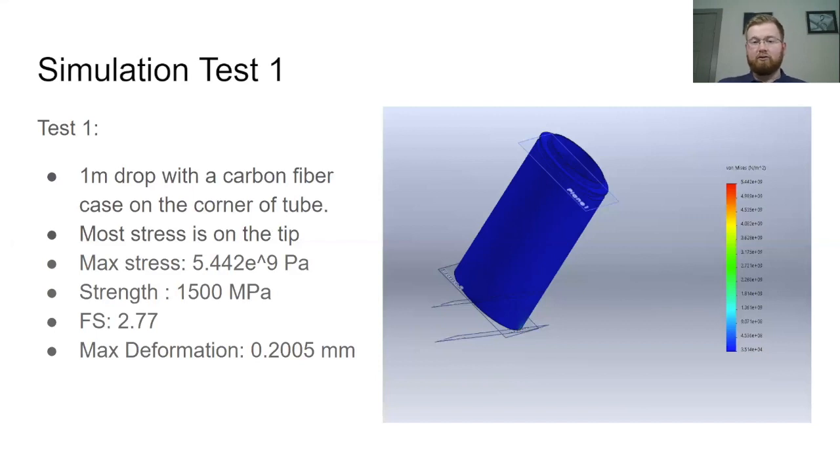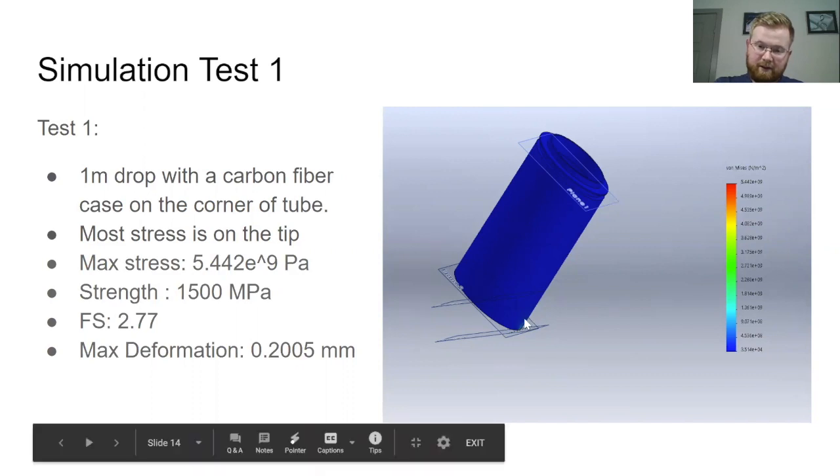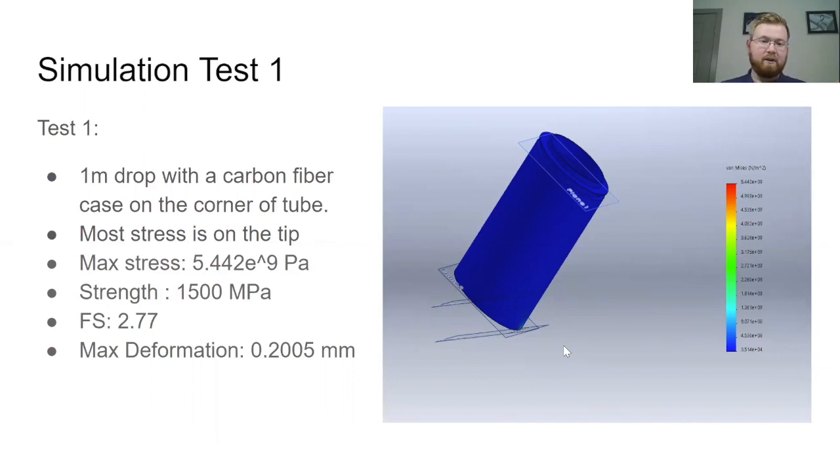We ran some testing on the shell from a one meter drop on its corner, like as specified that'd be the max weak spot. The most stress was on the tip, of course. And if you can see it, it is right on that corner, right where it lands. It's hard to see in the picture, but I want to make sure we have full view. The max stress was 5.4 times 10 to the 9th Pascals. With the max strength of carbon fiber, we had a factor of safety of 2.7, which is perfectly fine. Very minimal deformation of 0.2 millimeters. So the shell itself should be fine.